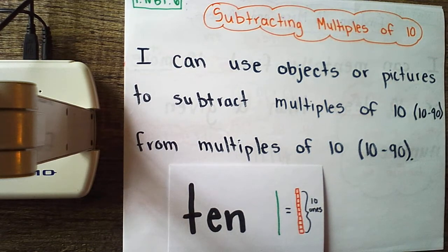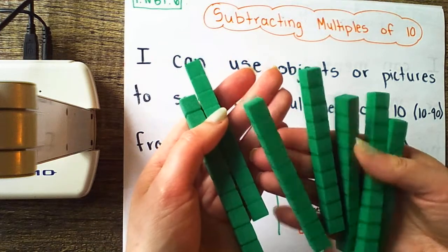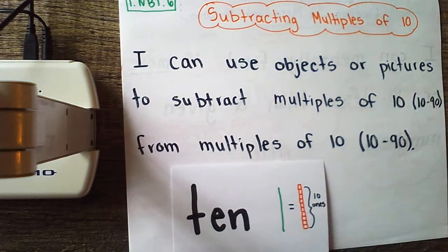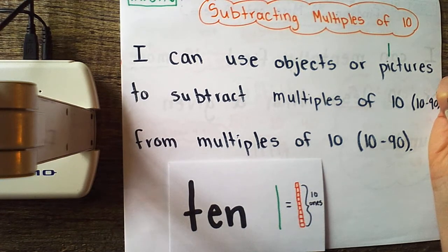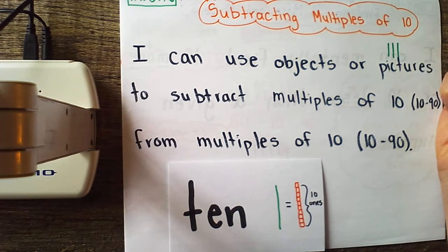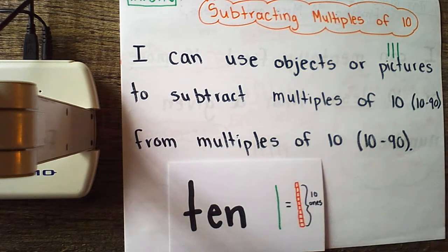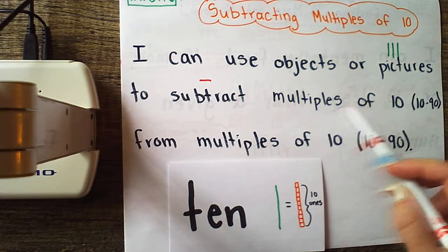Our objects can be our base 10 blocks or whatever you are using to represent 10. Our pictures are just going to be stacks or rods to represent 10. Three stacks or rods would be 10, 20, 30. We're going to use these objects or pictures to subtract. We know that when we subtract we're taking away, so we're going to be subtracting multiples of 10.